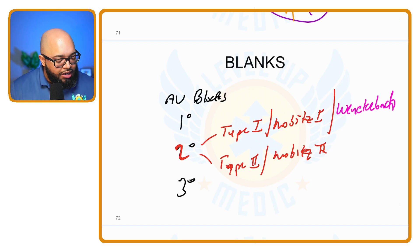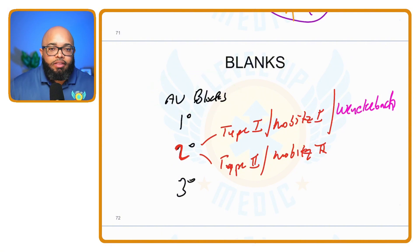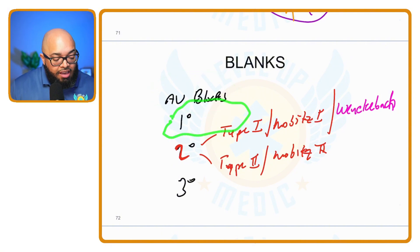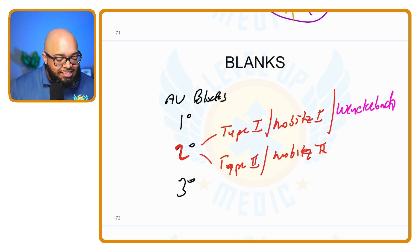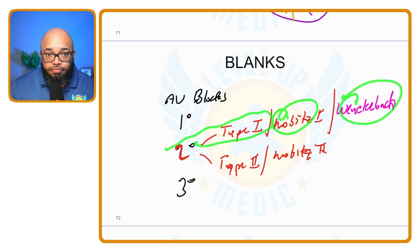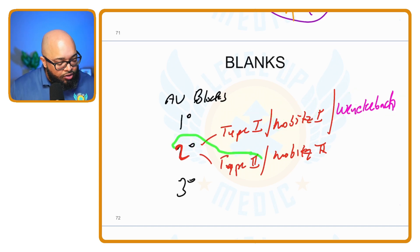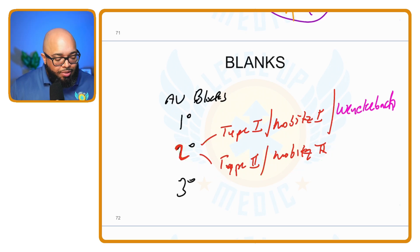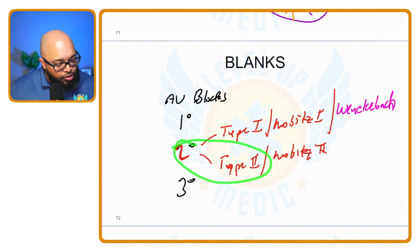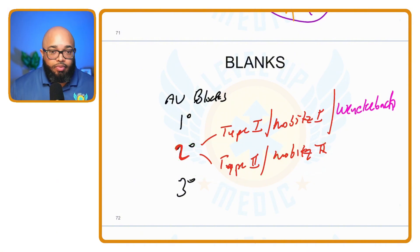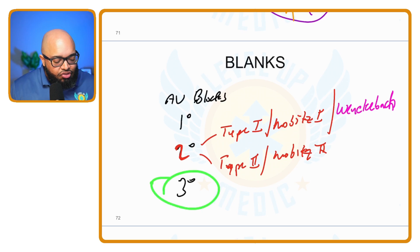So to review: AV blocks are either a first degree AV block, a second degree AV block — which you'd call second degree type one, Mobitz I, or Wenckebach, or second degree type two, Mobitz II — or a third degree block.